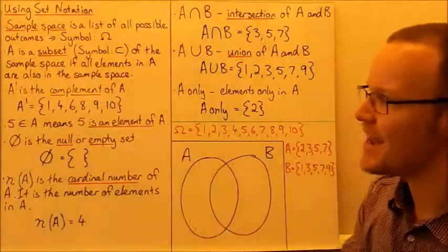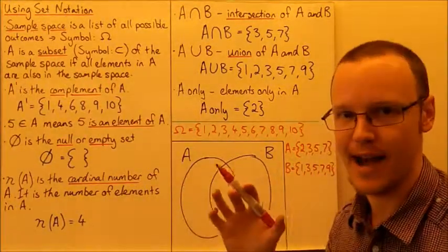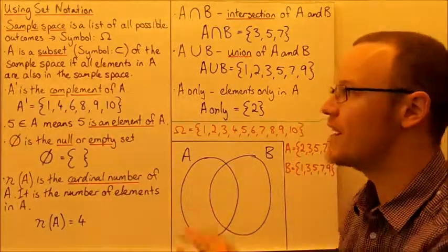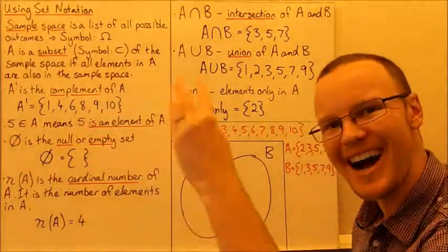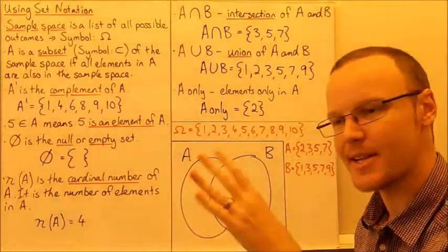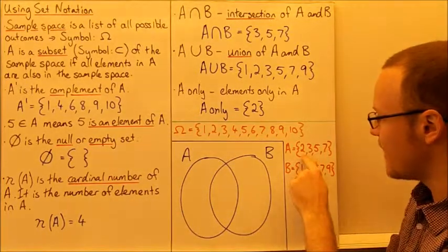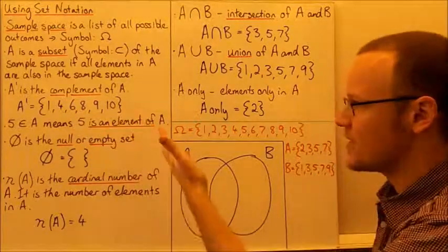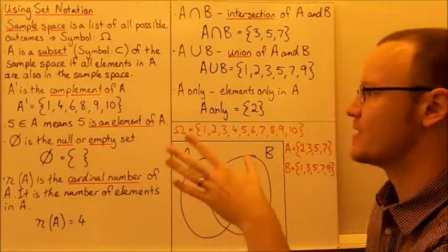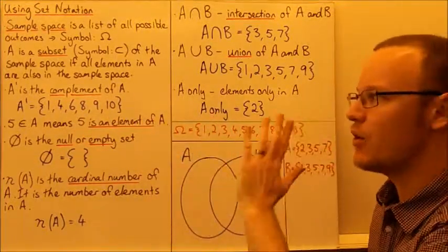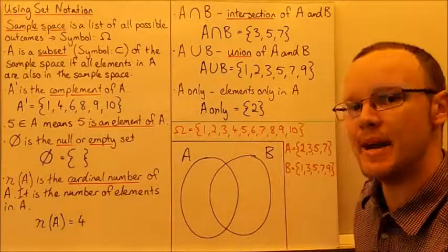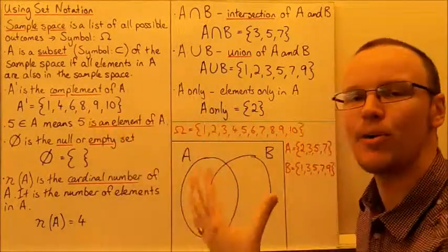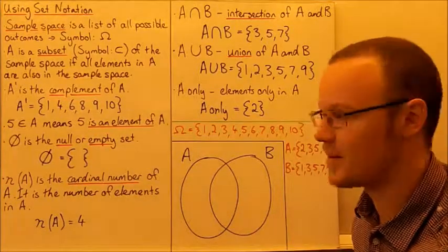A dash is the complement of A — so A with a little dash is the complement of A, and that's all of the values that aren't in A. The ones that are in A are 2, 3, 5, and 7, and these are the ones that aren't: 1, 4, 6, 8, 9, and 10 — they're all not prime numbers. A complement is going to be the non-prime numbers.